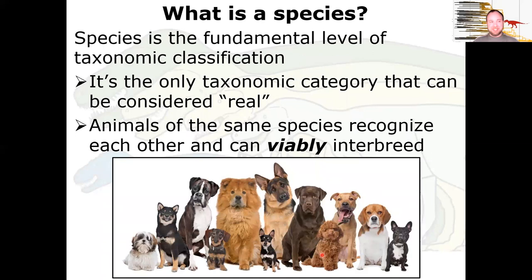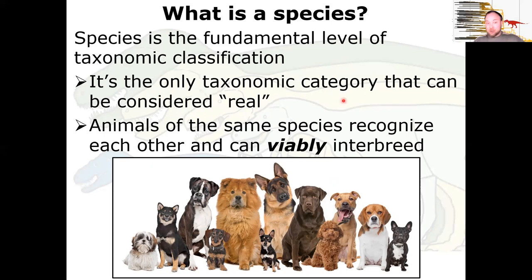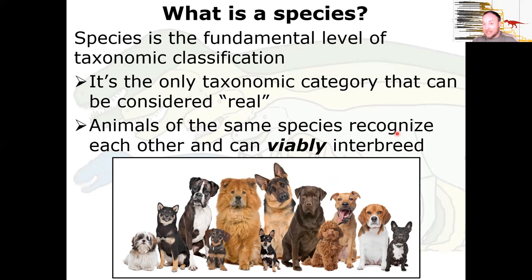What is a species? It's the most specific taxon in the hierarchy — our species is Homo sapiens. Species is the only taxonomic category that's actually real. Kingdom, phylum, class, order — those are convenient buckets we've created, but they don't have a natural meaning in nature. A species is defined as animals that recognize each other as the same and can viably interbreed, meaning their offspring are fertile and able to reproduce.